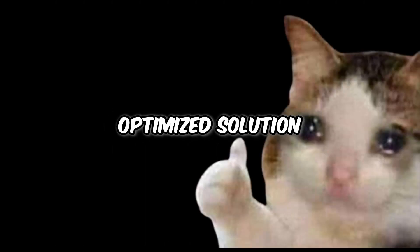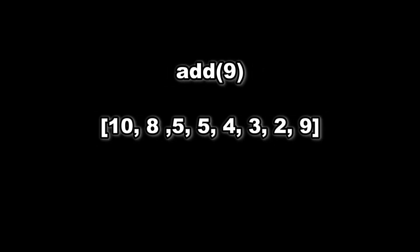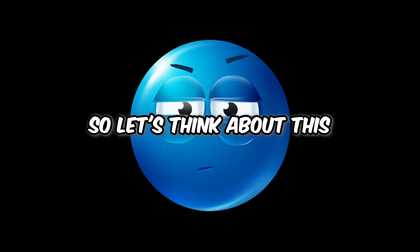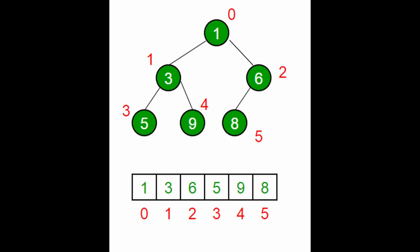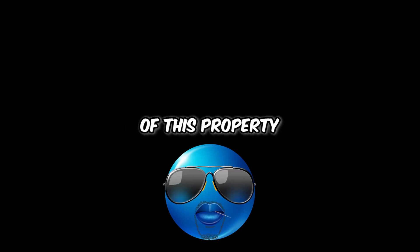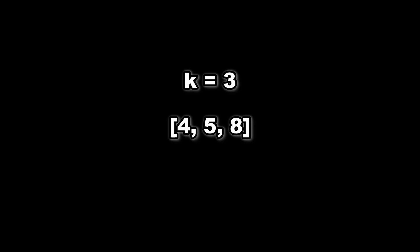Let's start thinking of an optimized solution. Currently we're sorting the array every single time we add an element. Is there a data structure that gives us the smallest or largest element at the top? There is — it's a heap. We can use a min heap, which always keeps the smallest element at the top. We can take advantage of this by making the min heap a size of k, so the top element in the min heap is always going to be the kth largest number.